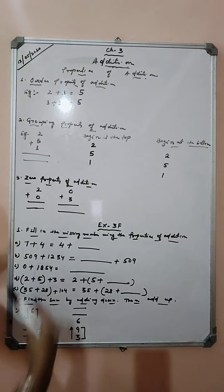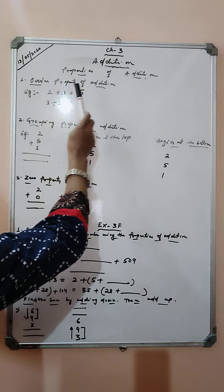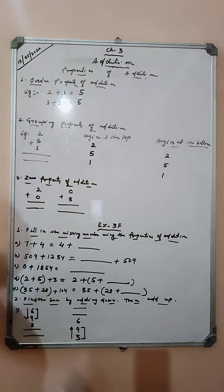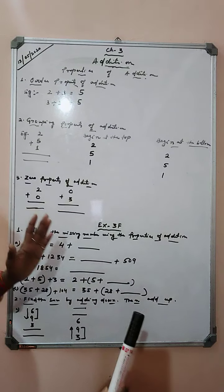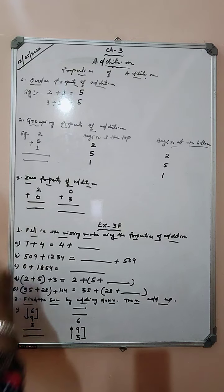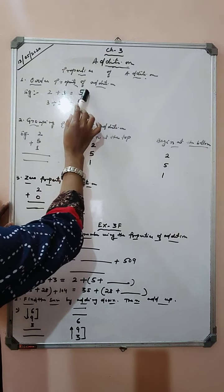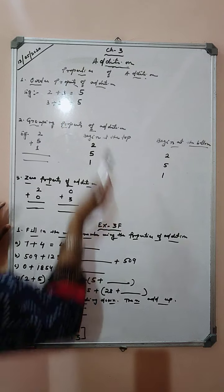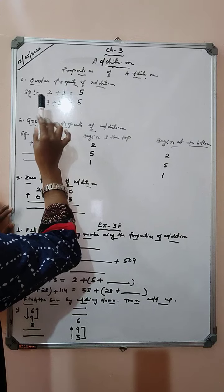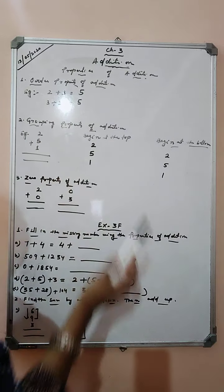Students, addition has a few properties. So let's understand one by one. Our first property is the order property of addition. Now what is this order property of addition? I have taken an example. You can see 2 plus 3 is 5. In the second case, 3 plus 2 is also equals to 5.